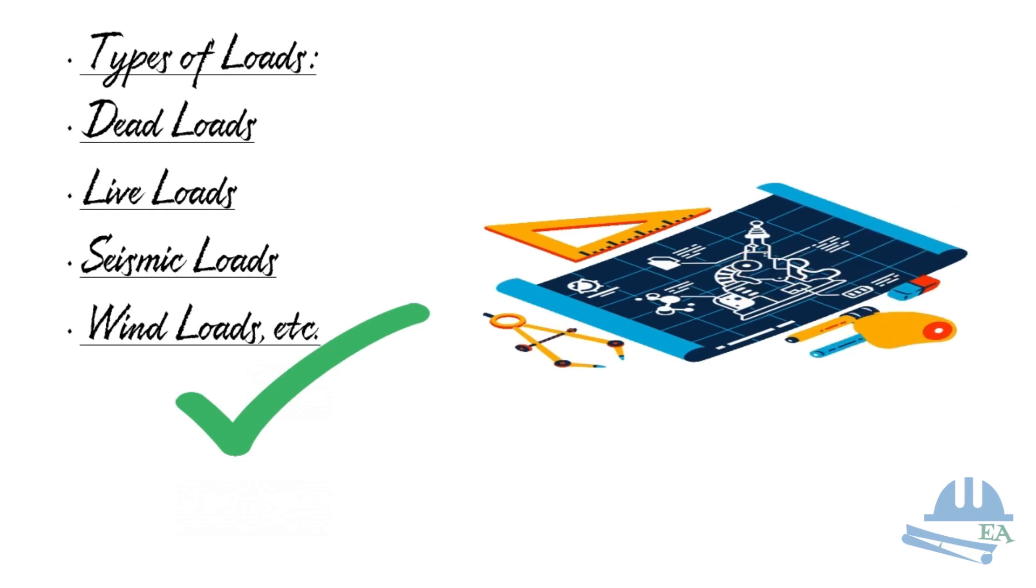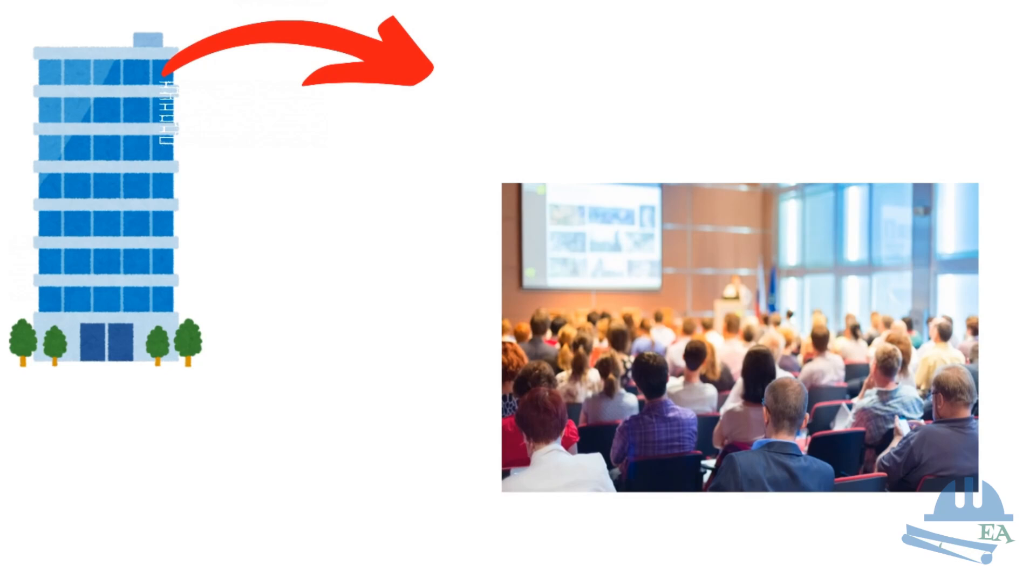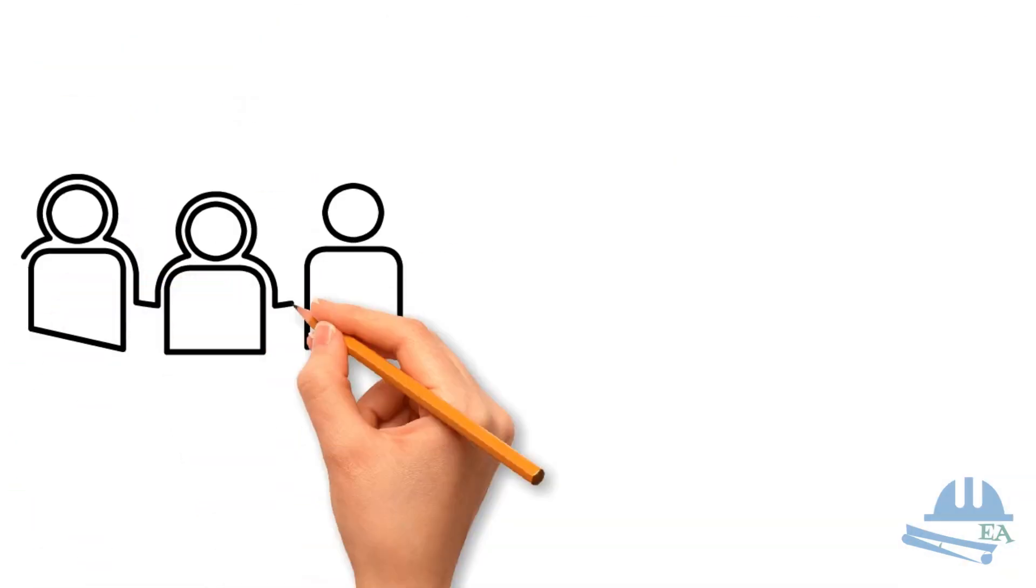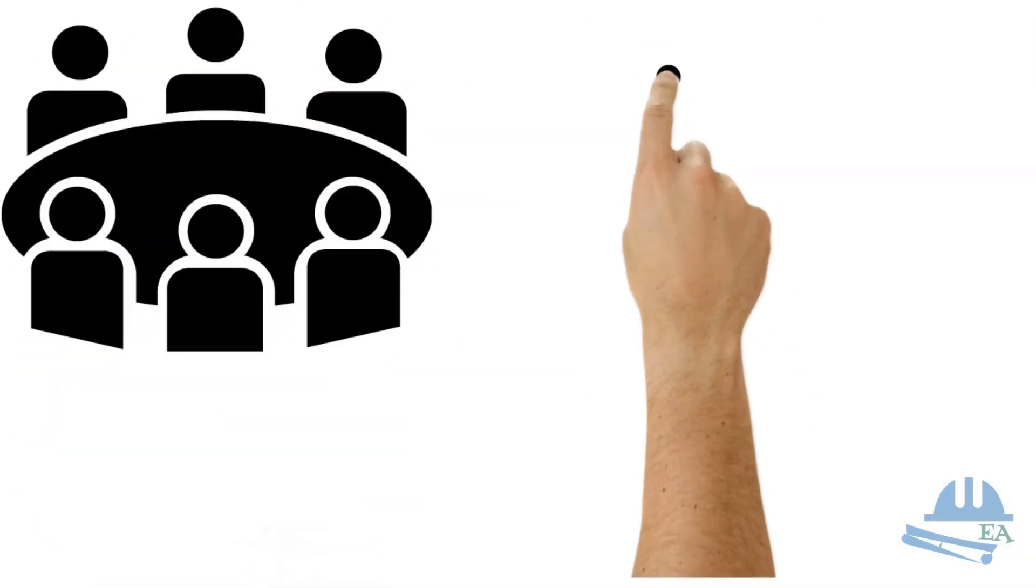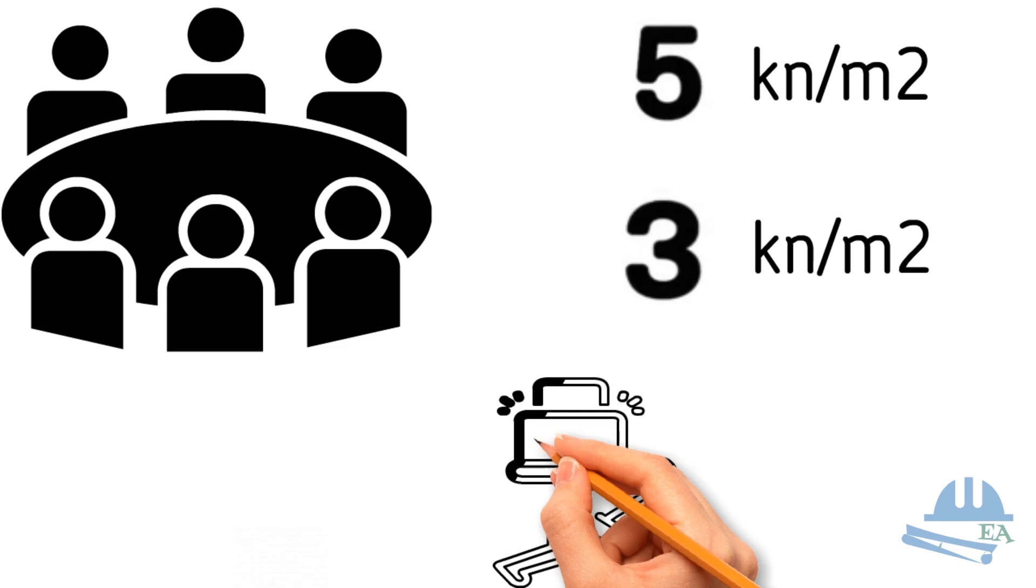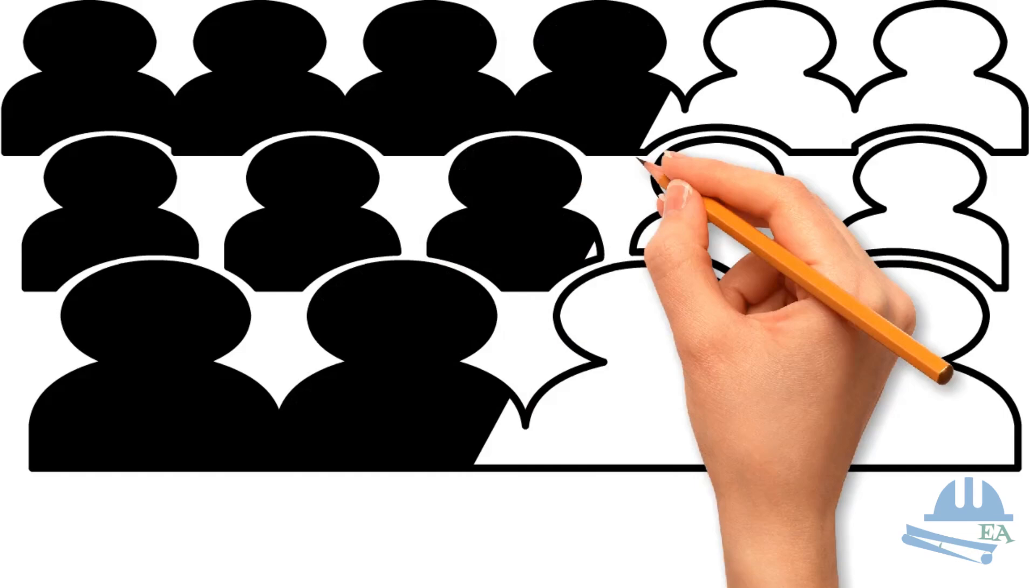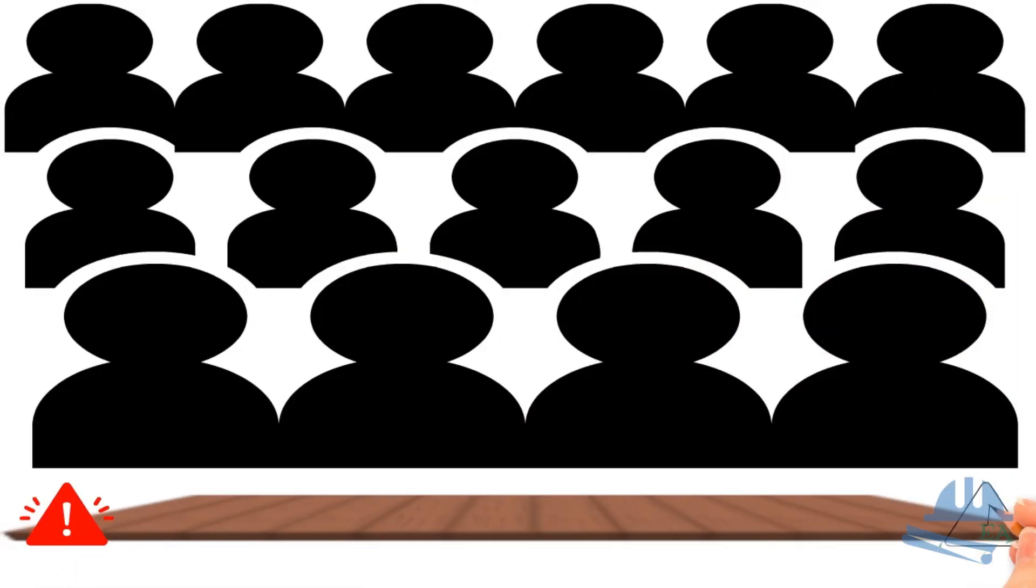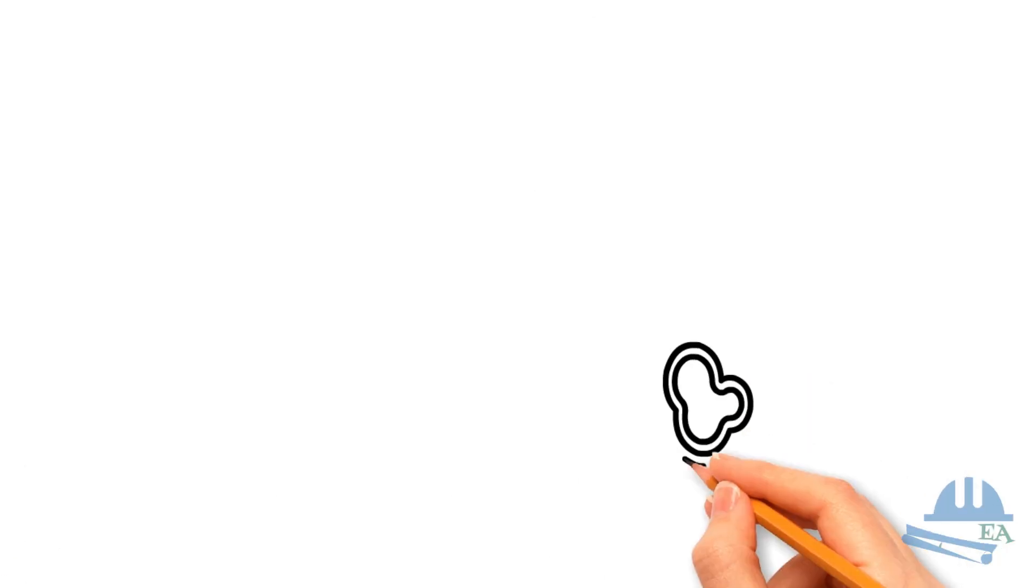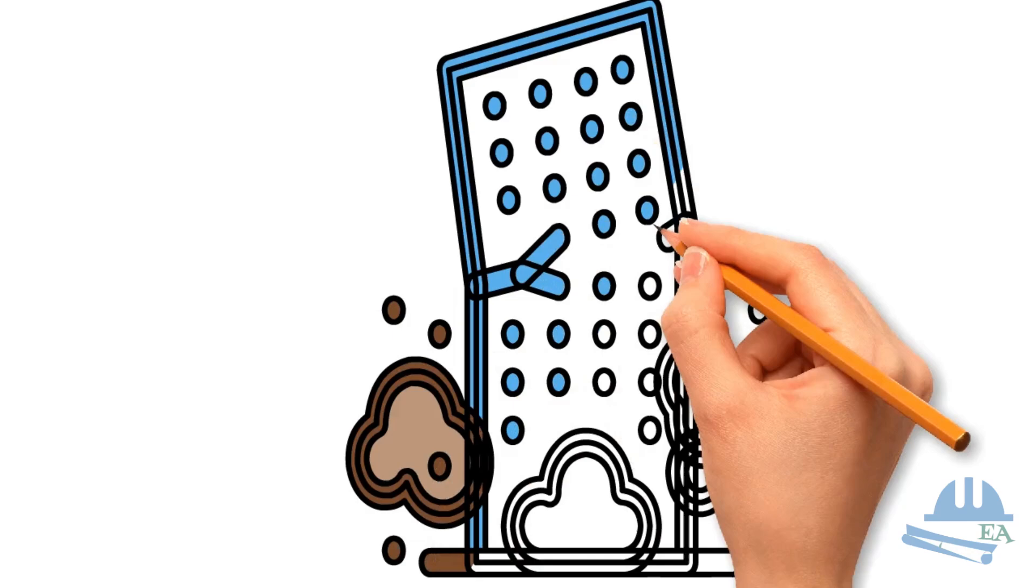Let's make this clear with an example. Suppose we have a building. On the topmost floor, there is a conference room. If we underestimate the live load, let's say instead of 5 kN per meter square, the designer takes only 3 kN per meter square load, and during some critical event, there is a gathering of a large number of people. The floor might not be able to support all the weight during that time. This would result either in huge sagging or worse, in a structural failure.